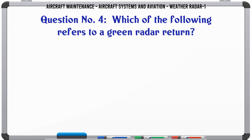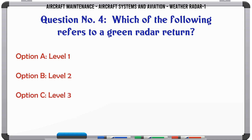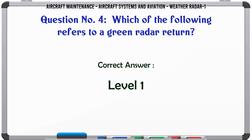Which of the following refers to a green radar return? A: Level 1. B: Level 2. C: Level 3. D: Level 4. The correct answer is Level 1.